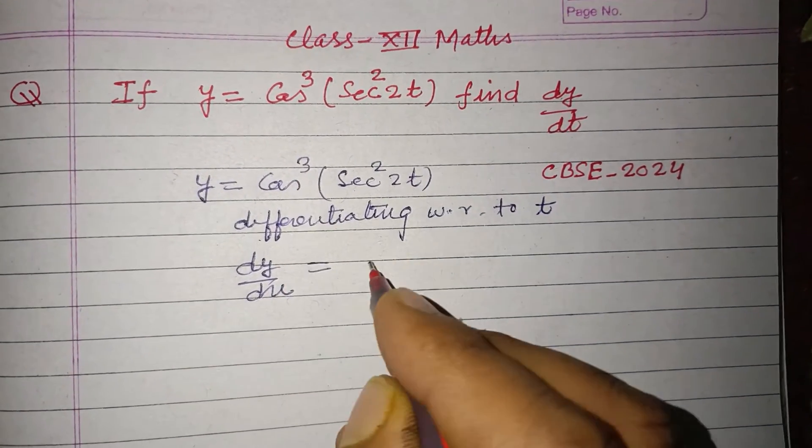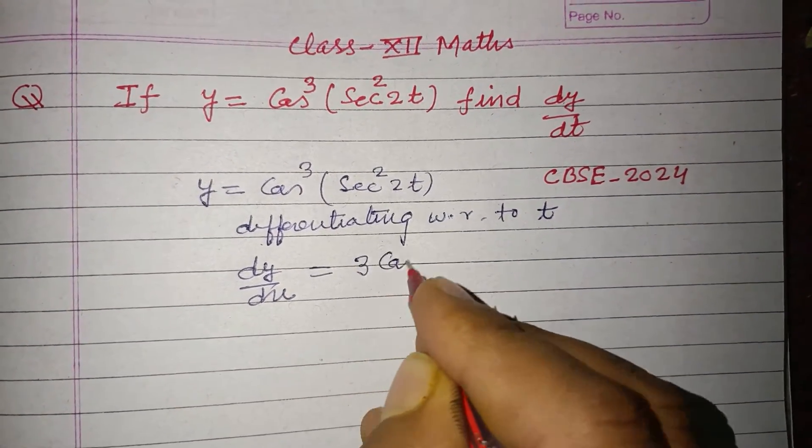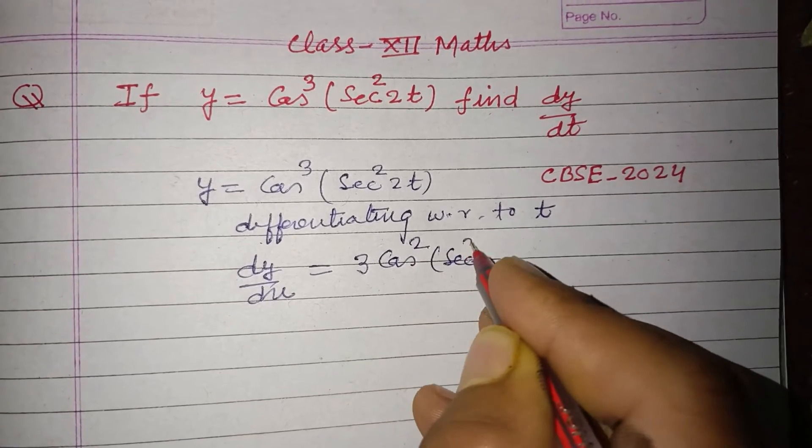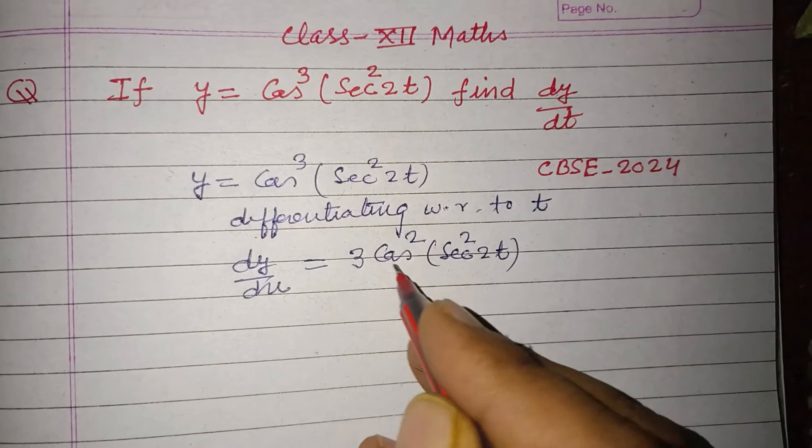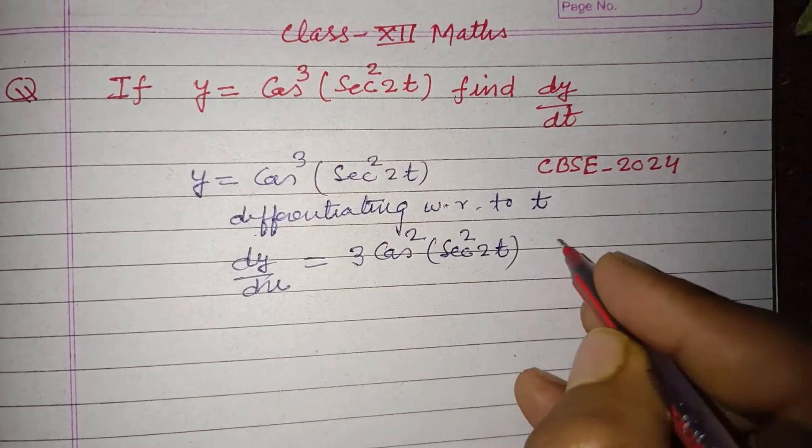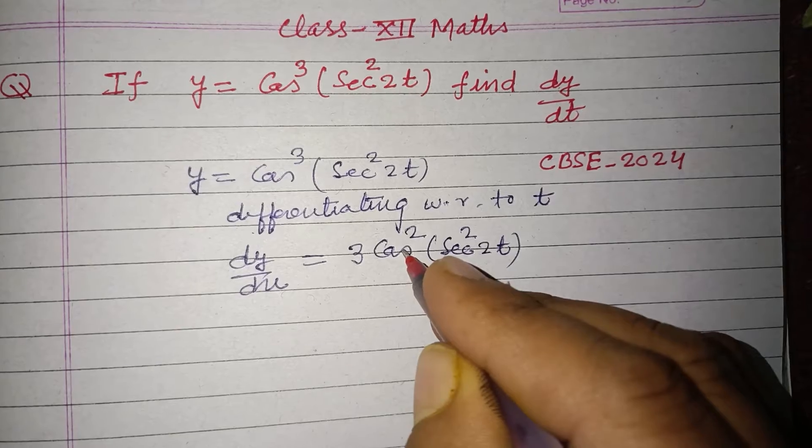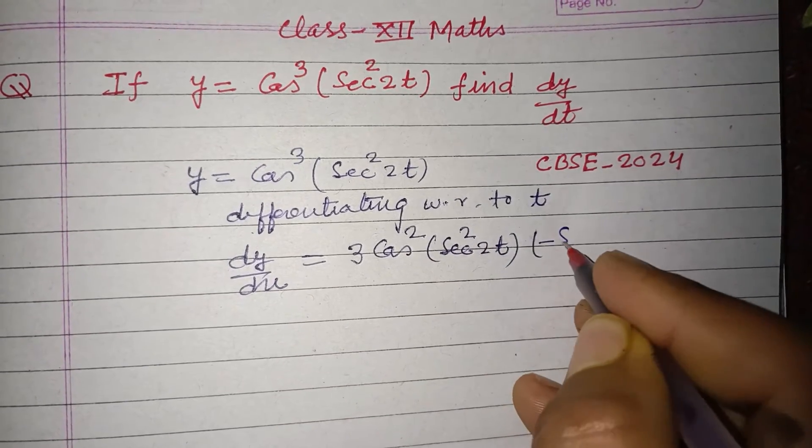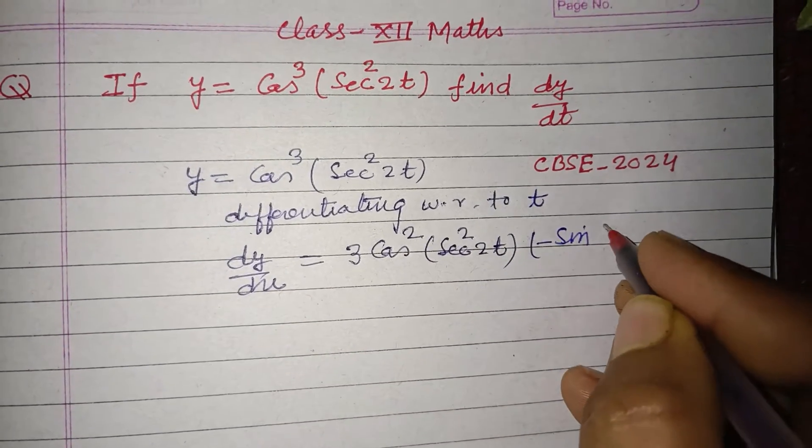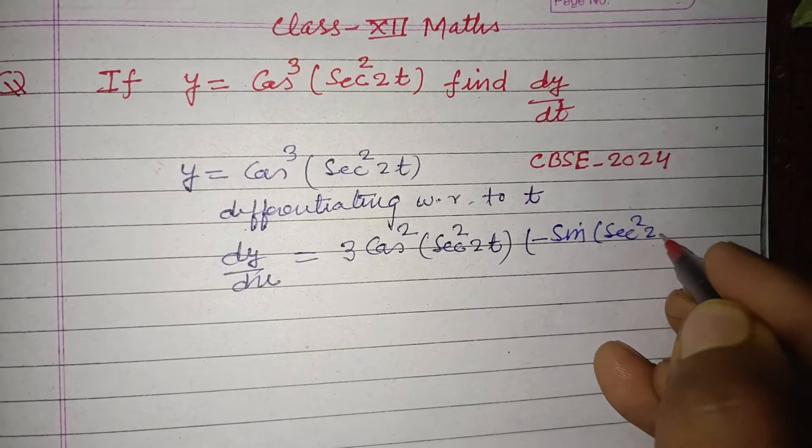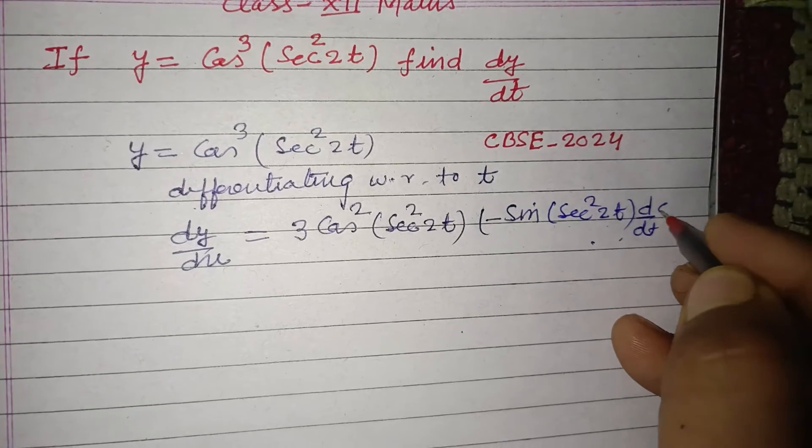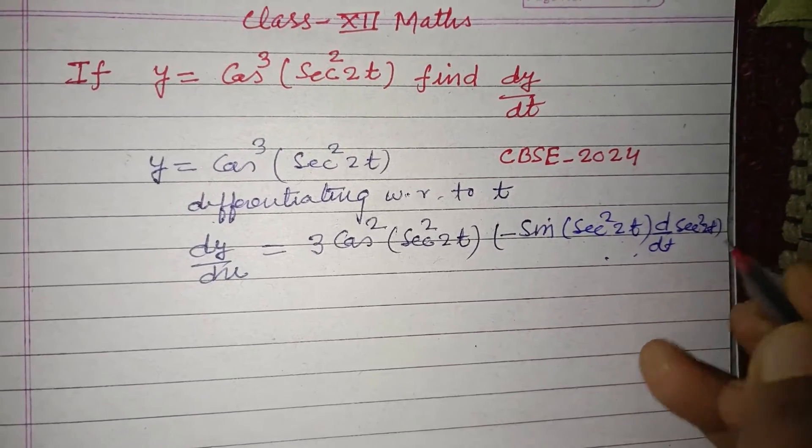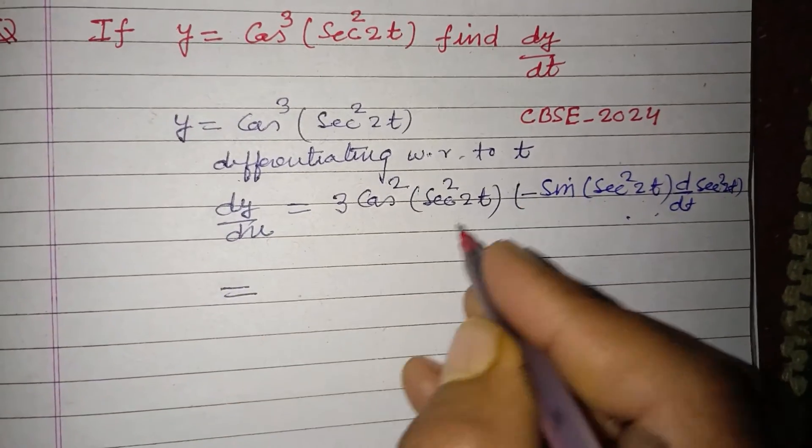So 3 cos²(sec²(2t)), now differentiation of cos x, which is minus sine sec²(2t). Now again differentiation of d/dt sec²(2t), so this is...